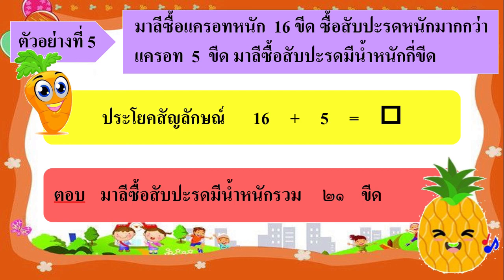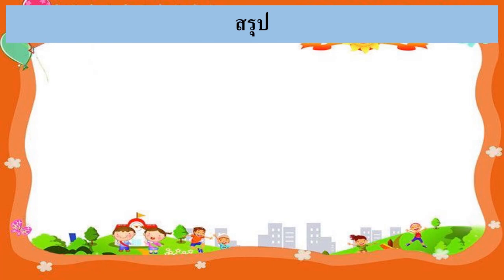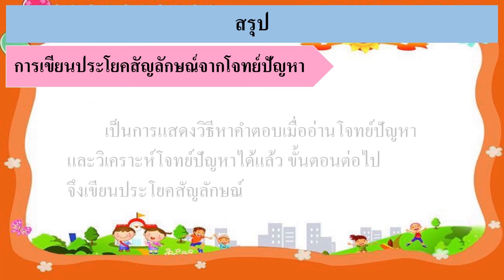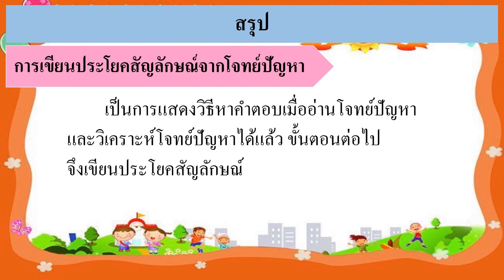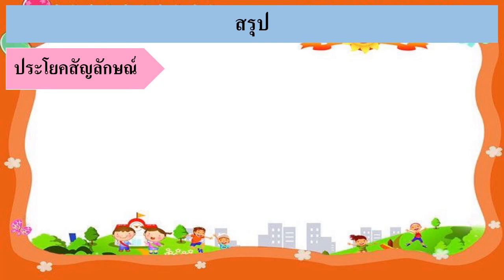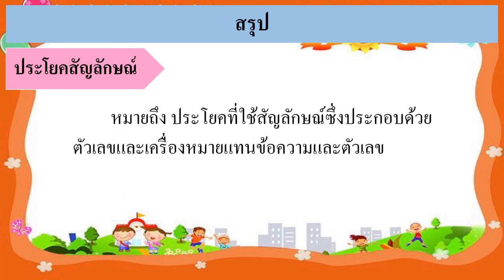เป็นอย่างไรกันบ้างคะ สำหรับตัวอย่างที่คุณน้องนำมาให้เด็กๆได้ดู ไม่ยากอย่างที่คิดใช่ไหมคะ ดังนั้นเรามาสรุปความรู้ไปพร้อมๆกับคุณน้องเลยค่ะ การเขียนประโยคสัญลักษณ์จากโจทย์ปัญหา เป็นการแสดงวิธีหาคำตอบ เมื่ออ่านและวิเคราะห์โจทย์ปัญหาได้แล้ว ขั้นตอนต่อไปจึงเขียนประโยคสัญลักษณ์ ซึ่งหมายถึงประโยคที่ใช้สัญลักษณ์ ประกอบด้วยตัวเลขและเครื่องหมายแทนข้อความและตัวเลขนั่นเอง